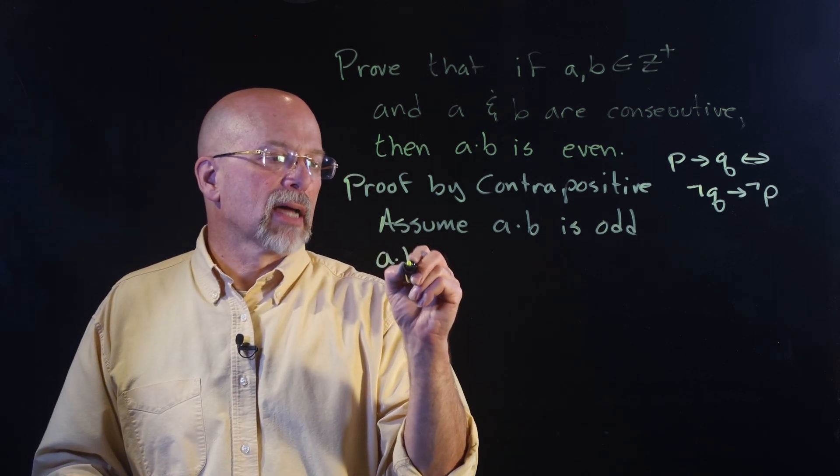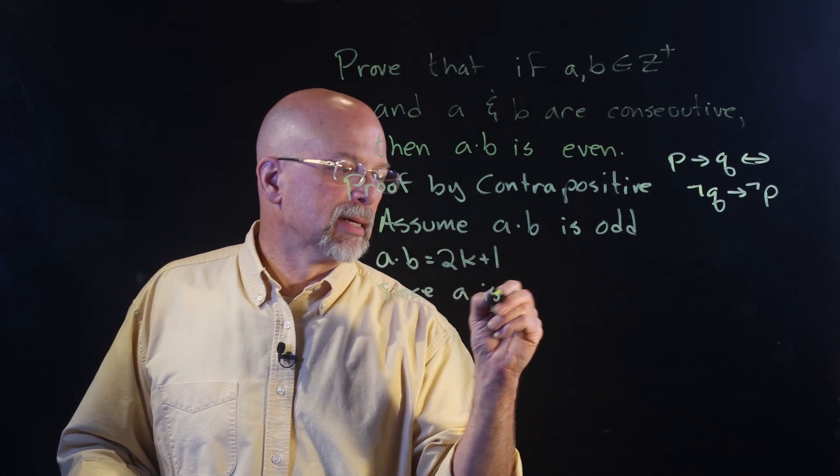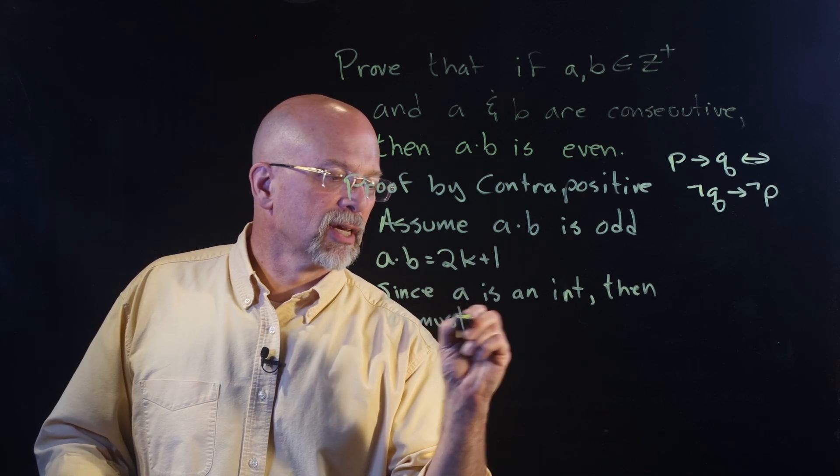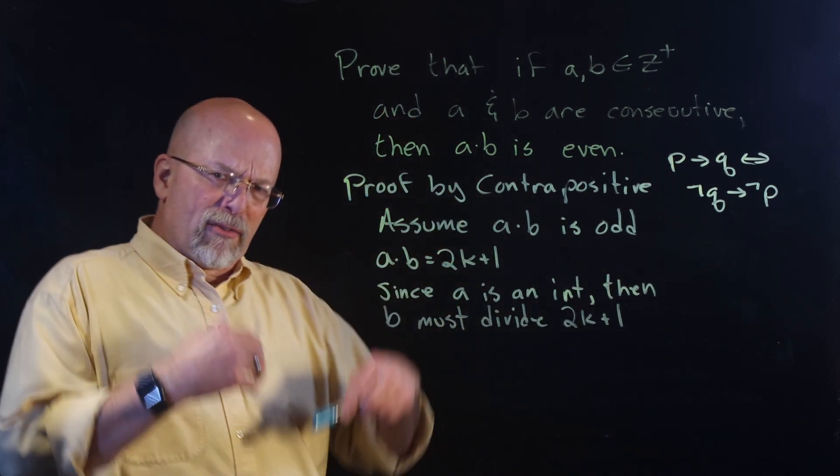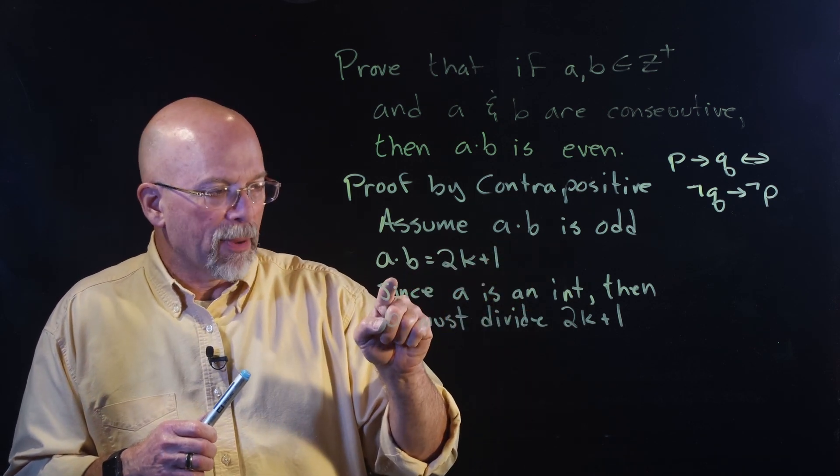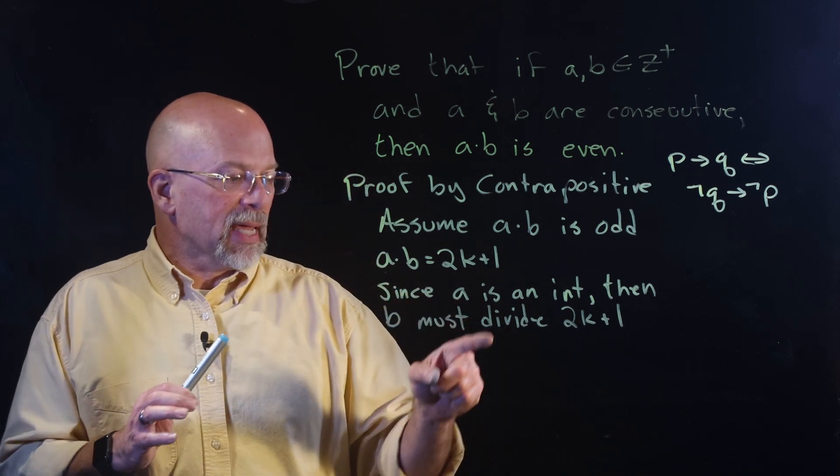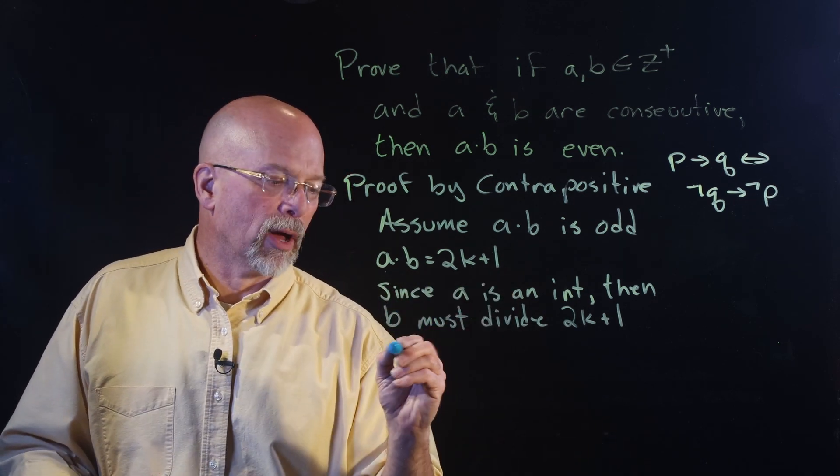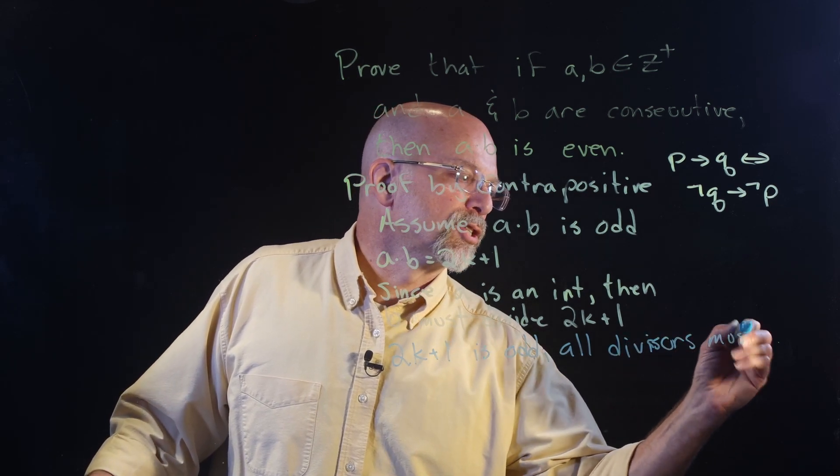So, that means that a times b is equal to 2k plus one for some integer k, right? Well, since a is an integer, then b must divide 2k plus one. We go back to that idea that whenever we talked about earlier about factoring, right? And we showed that basically 2k plus one, that value right there, that integer right there, is made up of the multiplication of, or the product of, a and b, which means b is a factor of 2k plus one. And since b is an integer, a also must divide 2k plus one. And so, since 2k plus one is odd, all divisors must be odd.